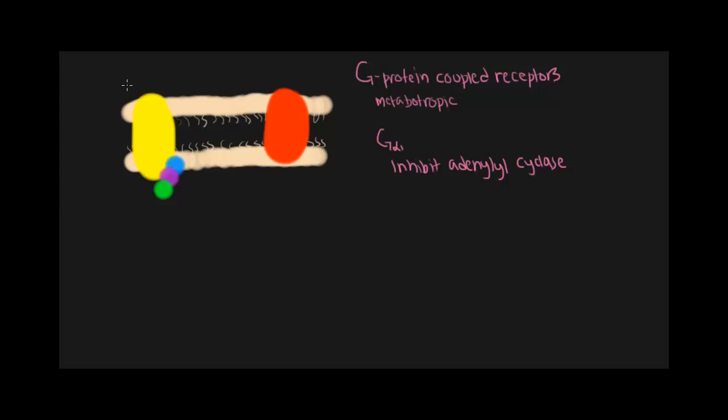As you can see here in yellow, this is your receptor protein. Bound to this receptor protein are your three subunits. Your G protein is heterotrimeric.